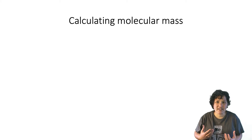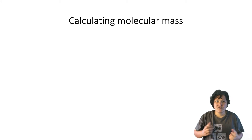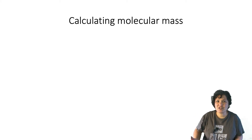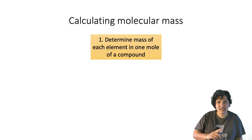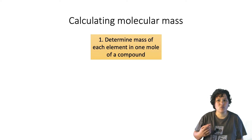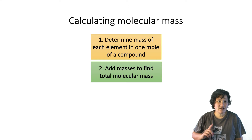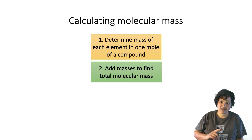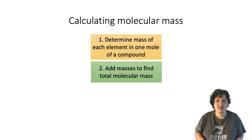So how do you calculate the molecular mass of a compound? First, you have to go through the molecular formula element by element and determine the mass of each element in one mole of that compound. Then you'll add up the masses of each element, which will give you the total molecular mass.